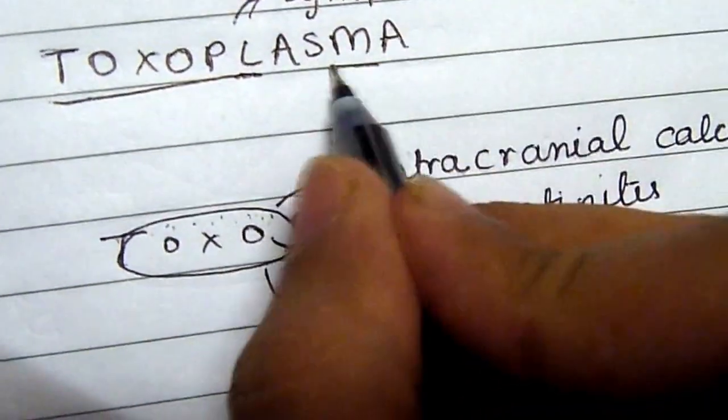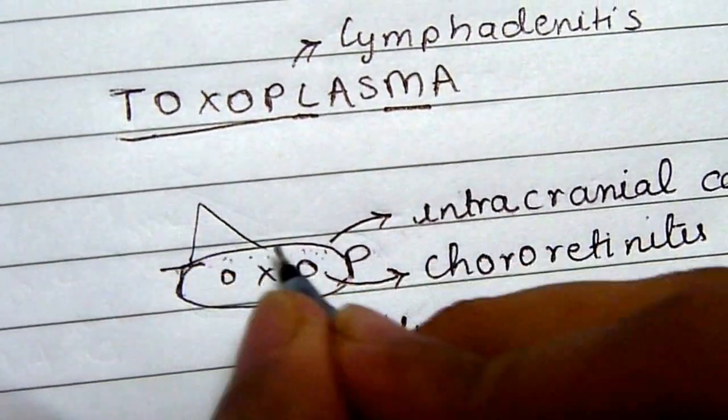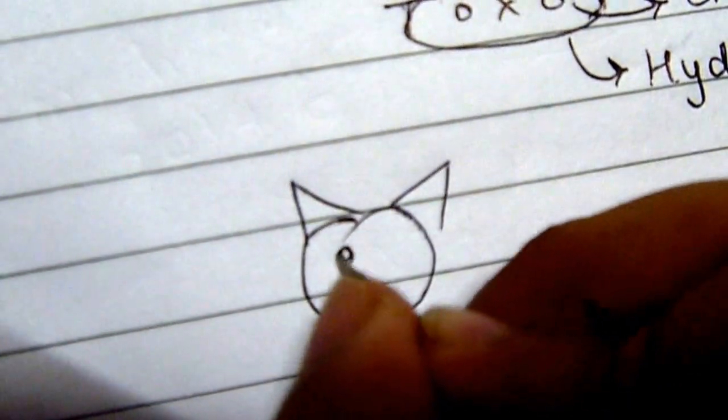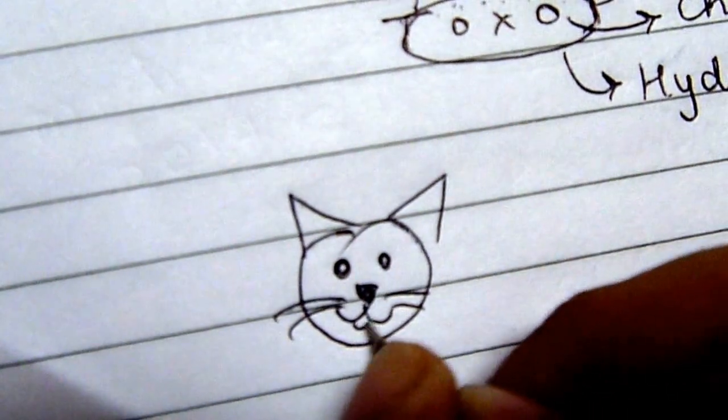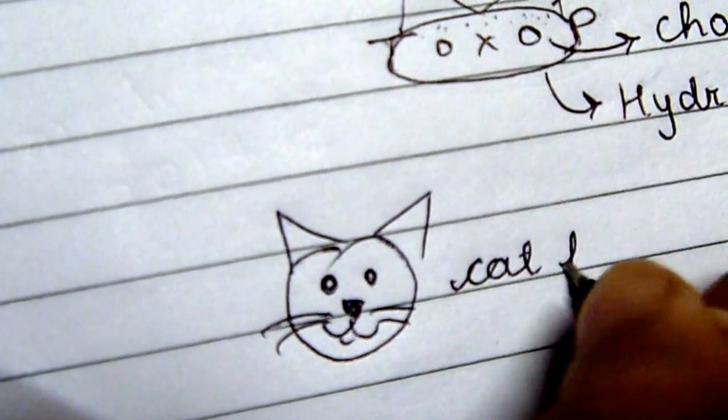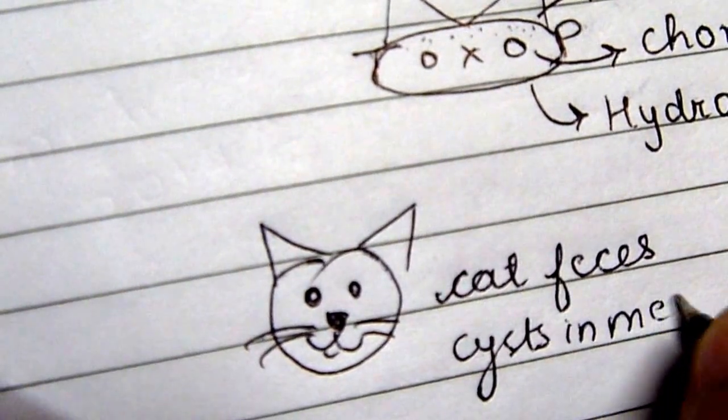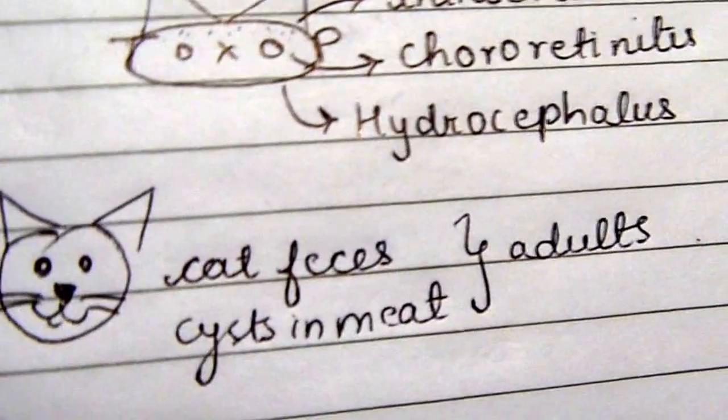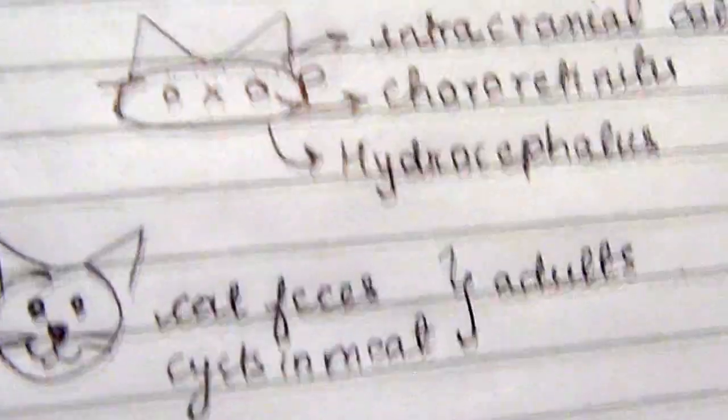Then comes M, and if you draw an M it looks like cat ears because cats do have those pointy ears. This will help you remember that toxoplasmosis is transmitted by cat feces or cysts in meat, but this is usually in adults. This is why they say that pregnant women should avoid cats because they might get infected with toxoplasmosis.